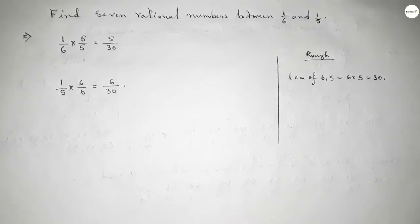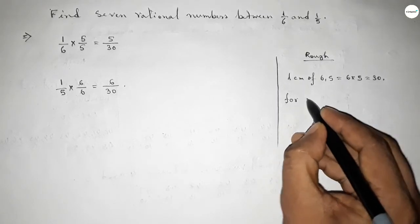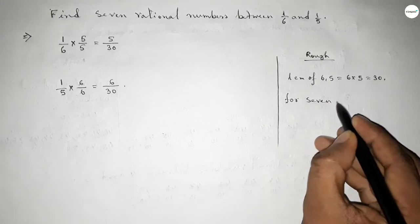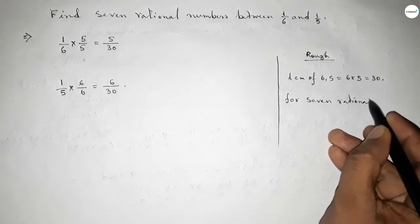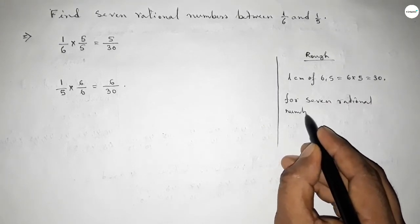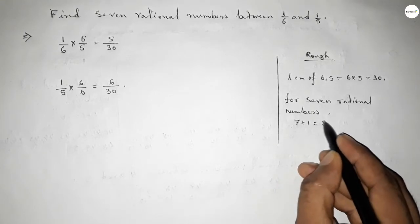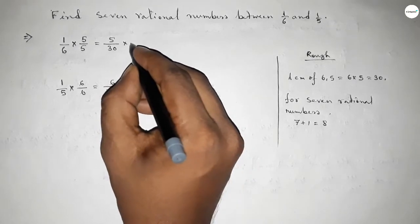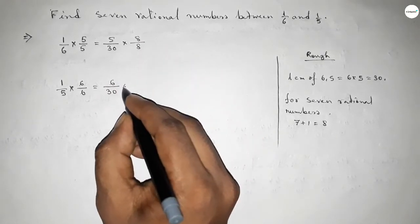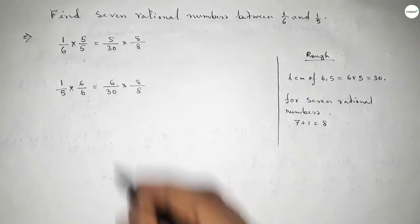Now for finding seven rational numbers between any two numbers, we have to follow one method. For finding seven rational numbers between any two numbers, we should multiply both numbers by 7 plus 1, which equals 8, up and down.